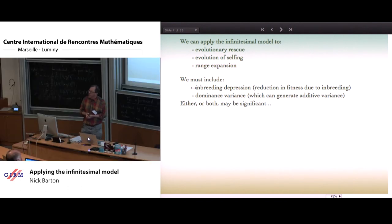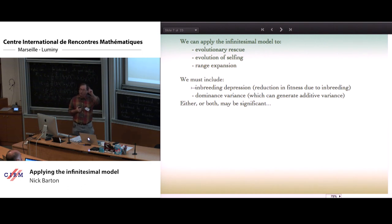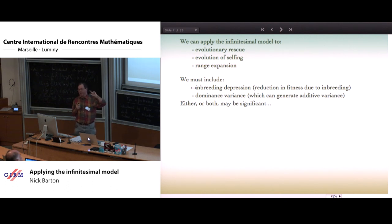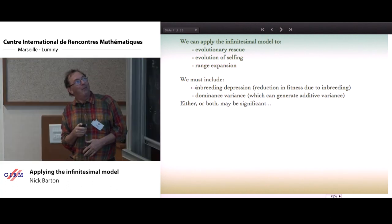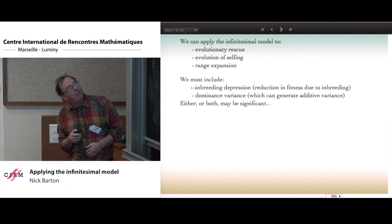When we started, I foolishly imagined that including dominance — the interaction between the two copies of an allele at the same locus within a diploid individual — would be easier than interactions between different genes at different loci, i.e., epistasis. Actually, it turns out that epistasis was much more straightforward, and we will see perhaps why.